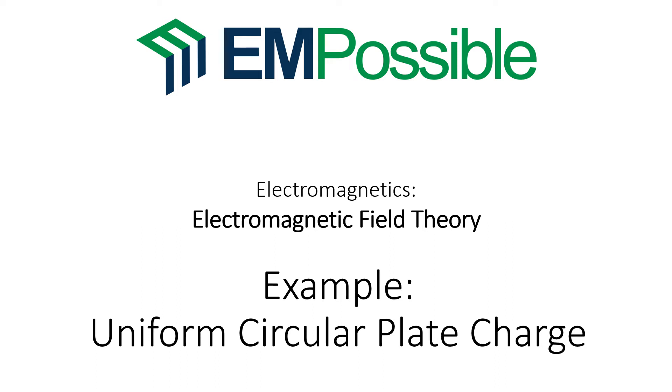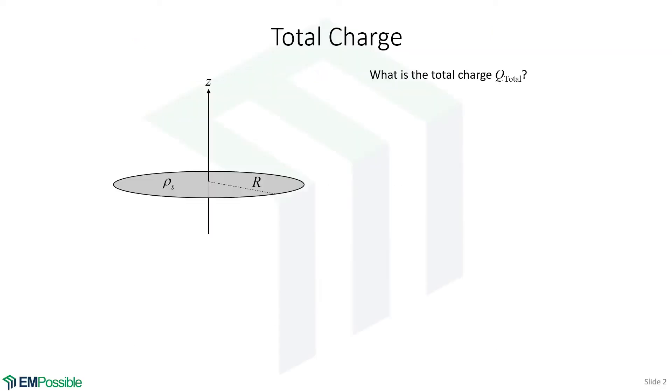Example: uniform circular plate charge. We have a finite circular plate charge on the left of radius big R and uniform charge density rho sub s. So the first question is, what is the total charge?